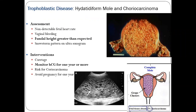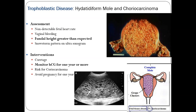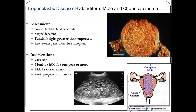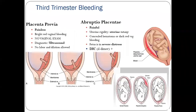Molar pregnancy is an abnormal form of pregnancy in which a non-viable fertilized egg is implanted in the uterus and fails to come to term. It is a gestational trophoblastic disease that grows into a mass in the uterus with swollen chorionic villi. Choriocarcinoma is a malignant tumor of the uterus originating in the cells of the chorion of the fetus.